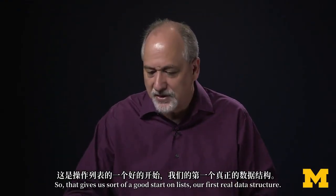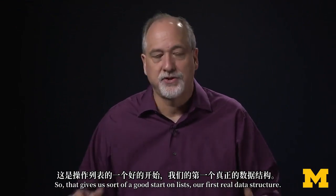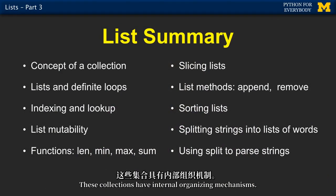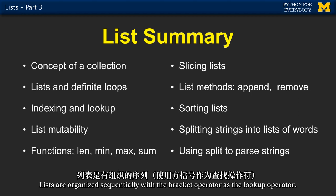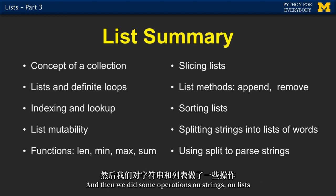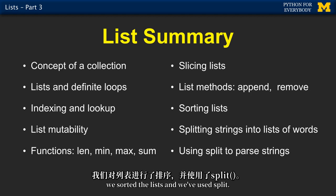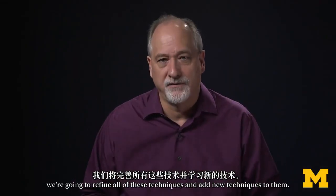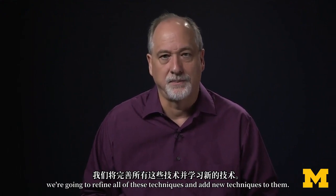That gives us a good start on lists - our first real data structure - and the concept of a collection where we put multiple things into one variable. These collections have internal organizing mechanisms: lists are organized sequentially and the bracket operator is the lookup operator. We did operations on strings, sorted lists, and used split. In the next two chapters, we're going to refine all of these techniques and add new ones.